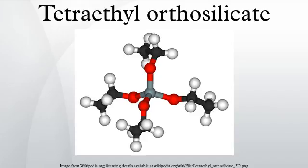Other reactions: TEOS has the remarkable property of easily converting into silicon dioxide. This reaction occurs upon the addition of water: Si(OC2H5)4 + 2 H2O → SiO2 + 4 C2H5OH. This hydrolysis reaction is an example of a sol-gel process. The side product is ethanol.